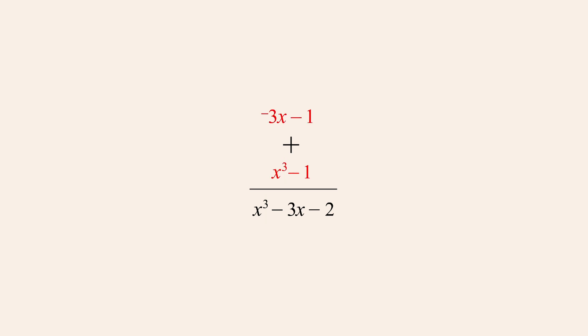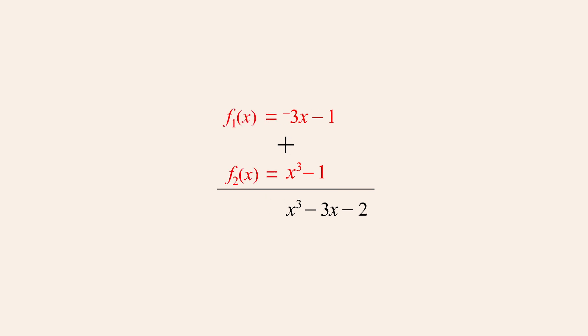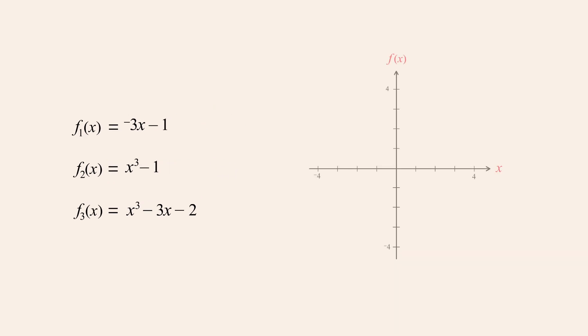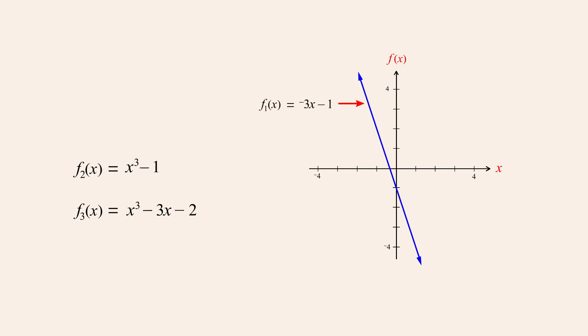And since these two polynomials each define a polynomial function, summing these functions creates a new polynomial function. We can see how this process works graphically by looking at the graphs of these functions. We added the function negative three x minus one and the function x cubed minus one. Summing two functions adds the values of the functions at every point.